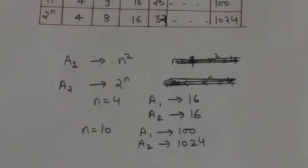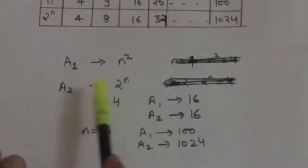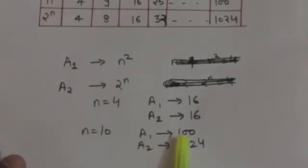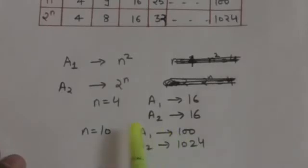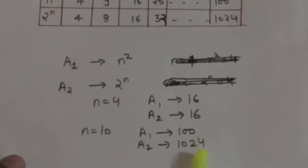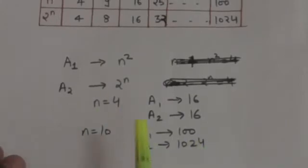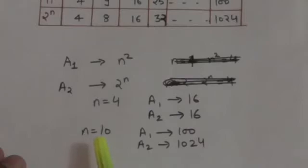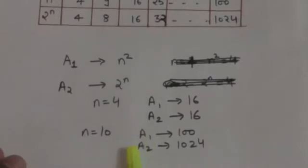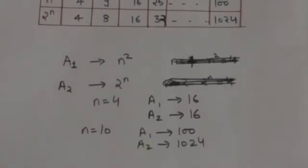So they will take almost the same time to solve the problem. But when the size of input increases to 10 — when n becomes equal to 10 — algorithm A1 will have to perform only 100 basic operations, while algorithm A2 will have to perform 1024 basic operations to solve the same problem. So algorithm A2 will take more time than algorithm A1.